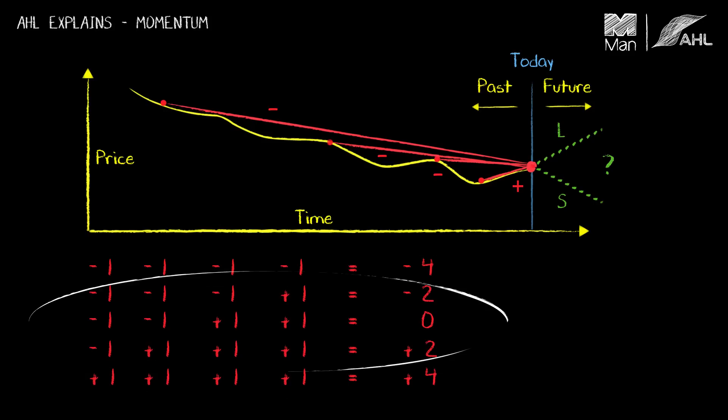These values in the middle mean that there was some uncertainty of the price. Sometimes it was going positive, sometimes it was going negative. Now this we would call the momentum signal evaluated at today's time point.